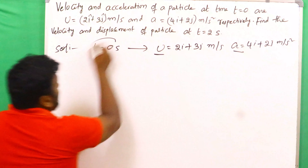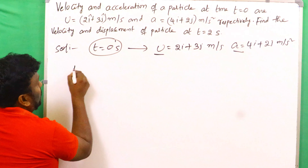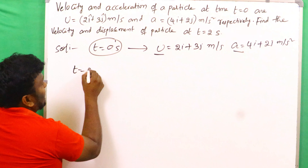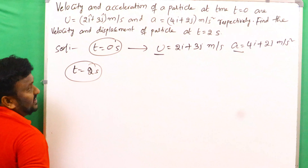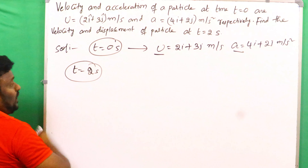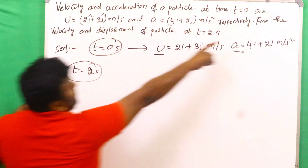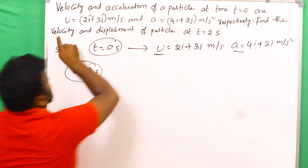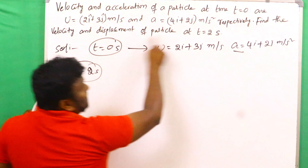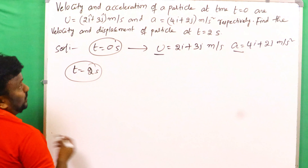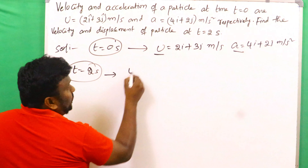Now we have to find out the same quantities when the time equals two seconds. That is the problem — we have to find the velocity and displacement at time t equals two seconds.